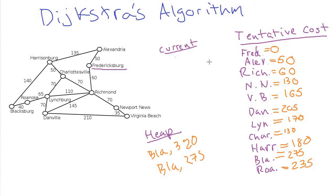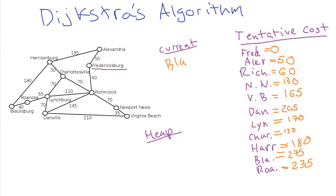Blacksburg at 275 is dequeued. Checking Roanoke and Harrisonburg — neither is better. Then we dequeue the stale Blacksburg entry at 320 and again find nothing to update. We then try to get something from the heap, but it's empty. The algorithm is done.